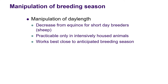Other than social cues, we have the manipulation of day length. Decreasing day length from the equinox for short-day breeders is what can bring those animals on faster. But in Australia this is almost completely irrelevant because we graze animals outdoors and are unable to control the light. It's much easier in a long-day breeder because you can just leave lights on when it gets dark. If there is anybody in Europe where you could bring animals indoors and control their light exposure, it does work best — as always — closest to the anticipated breeding season.